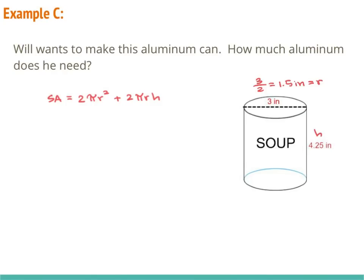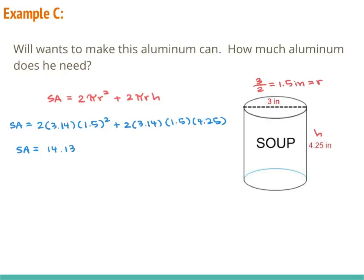And our height is 4.25 inches. Now we substitute into the formula: surface area is equal to 2 times 3.14 times 1.5 squared, plus 2 times 3.14 times 1.5 times 4.25. I need to follow order of operations, so I need to square it before I multiply. So 1.5 squared is 2.25. So 2.25 times 2 times 3.14 gives me 14.13, plus 2 times 3.14 times 1.5 times 4.25 gives me 40.04.